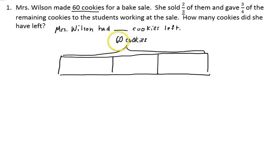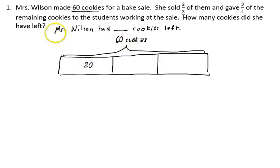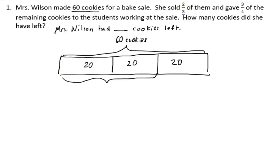If we had 6 cookies, that would put 2 in each piece. Since I have 60 cookies, that means I would put 20 cookies in each third. So I have three-thirds, with 20 cookies in each third. She sold two-thirds of the cookies, so that would be two of the sections — that's how many she sold.